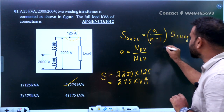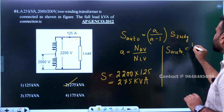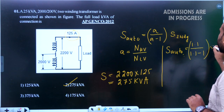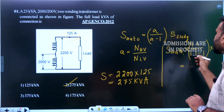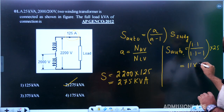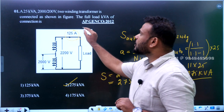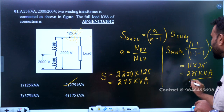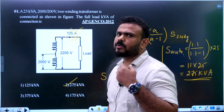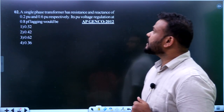So whether you use the current directly — multiplying voltage into current to get the apparent power — or use the turns ratio formula, you get the same answer of 275 KVA. Option 2 is the right answer for this question. Now let us go to the next question.